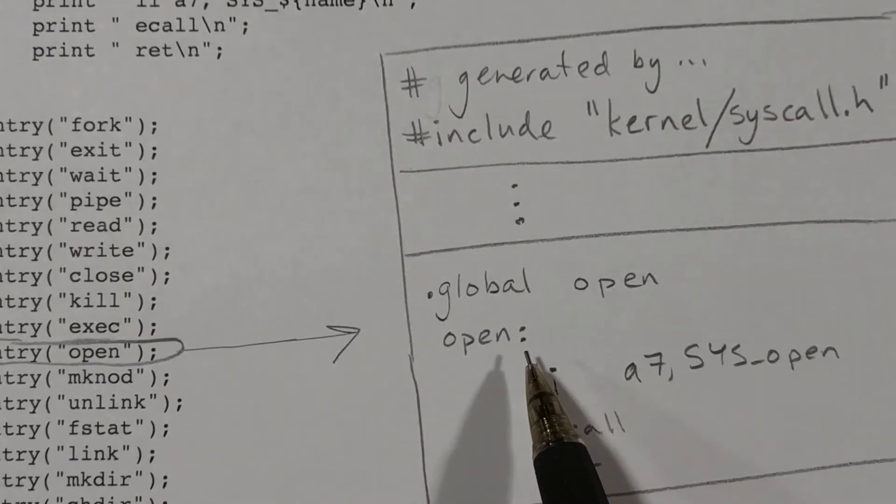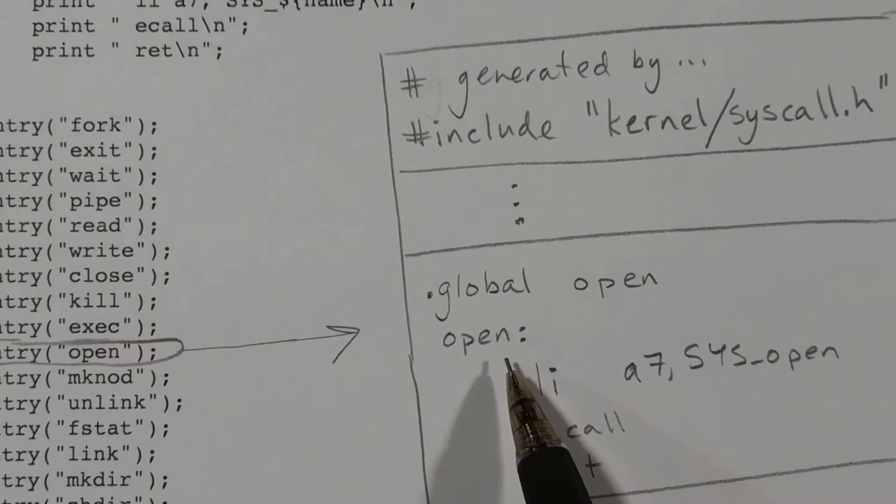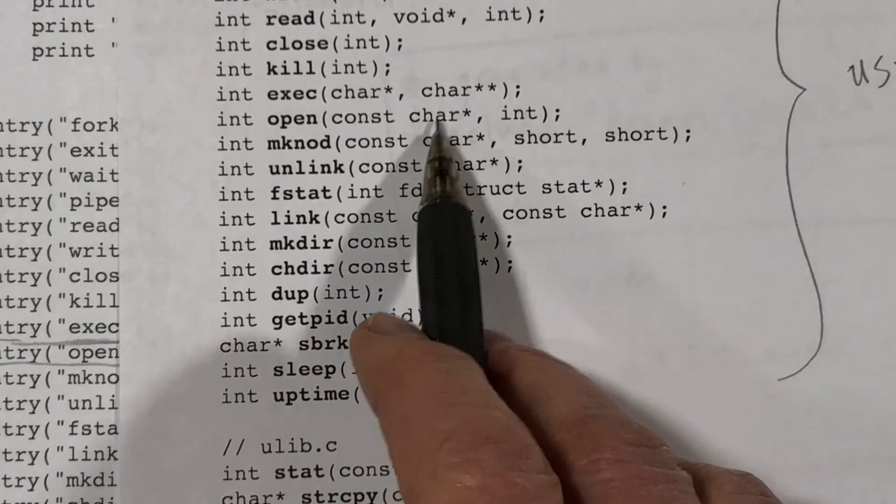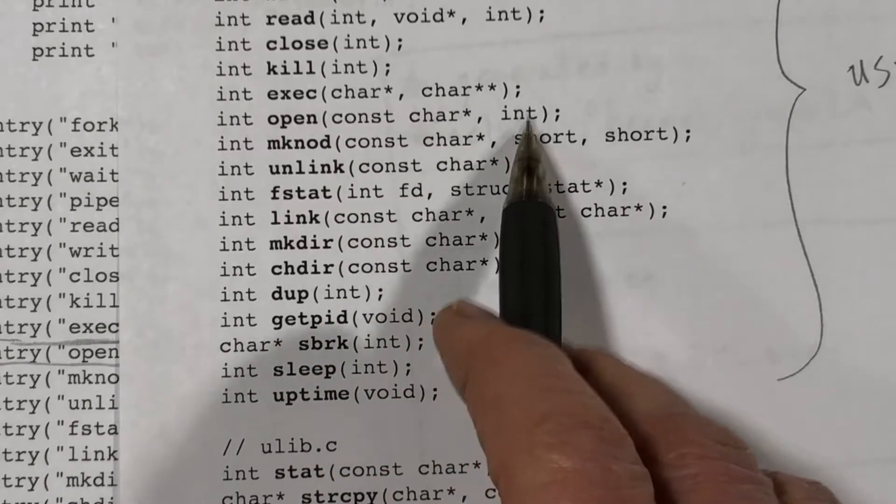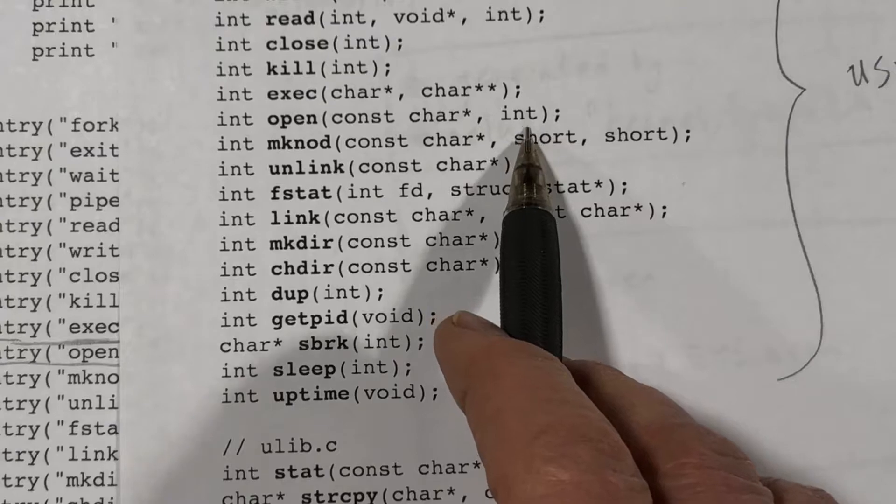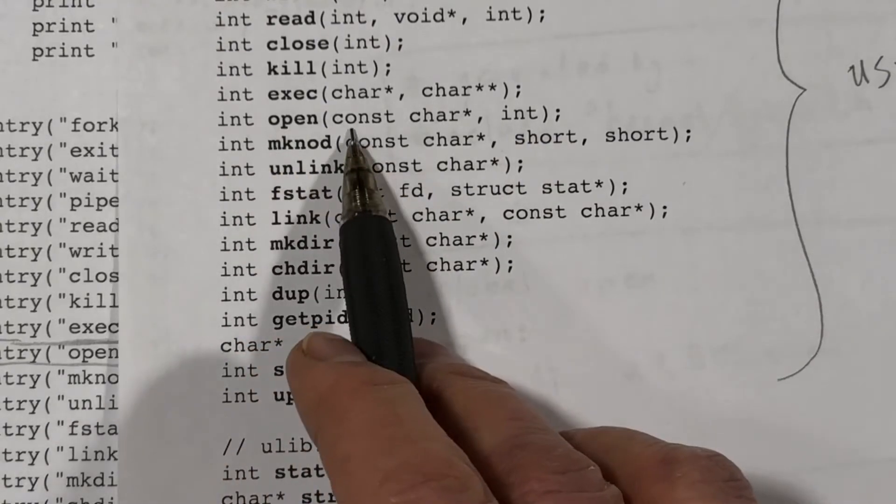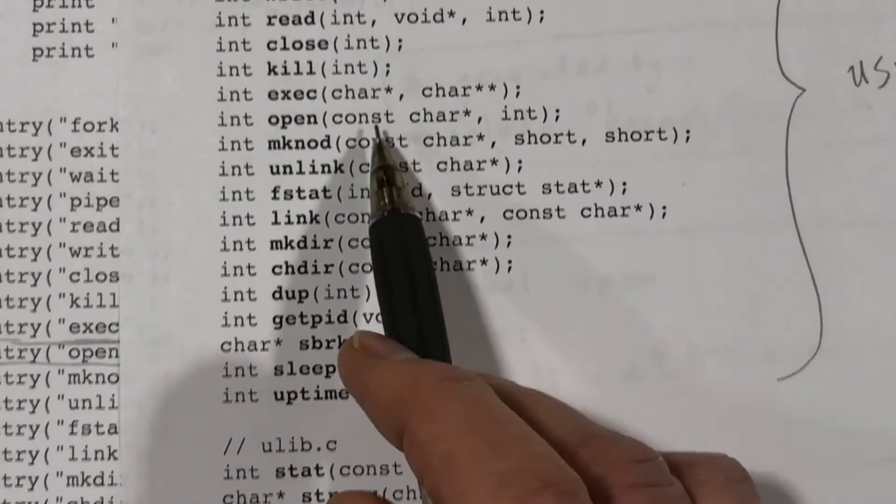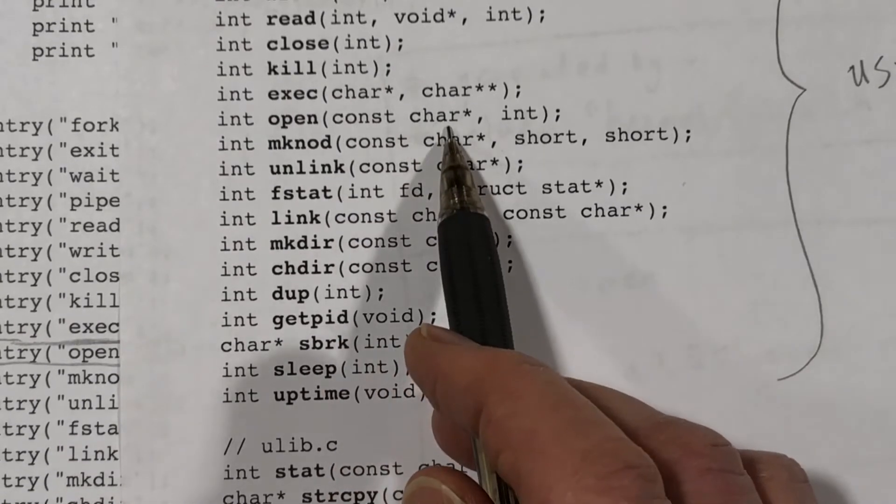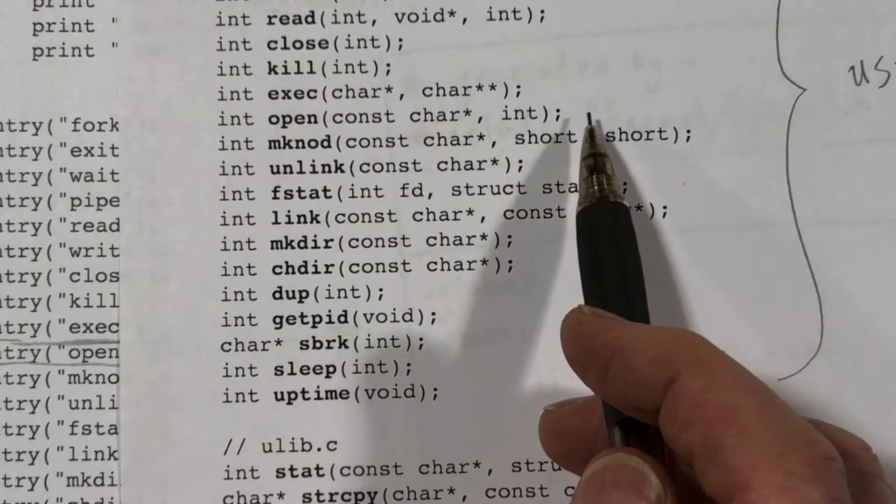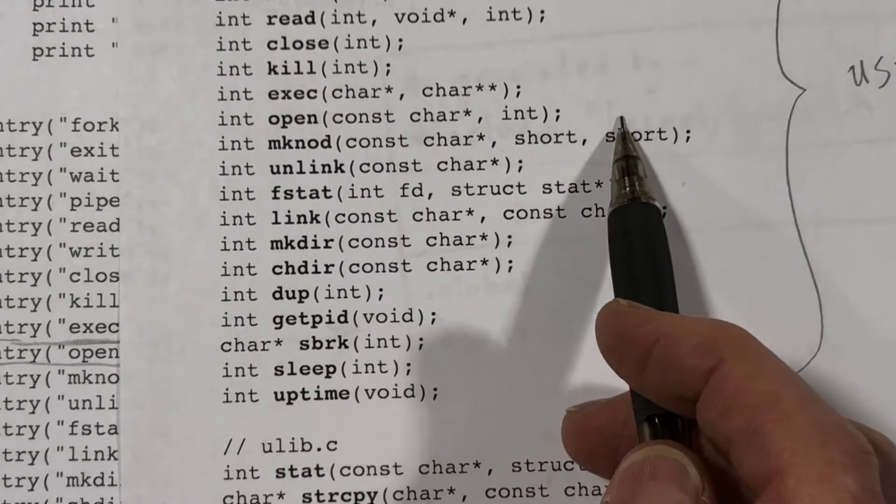Now, we are passing arguments in the open system call. So if we look at open here, we see that we passed two arguments pointing to the file name and the mode that we want to open that file in. And we return a value. Arguments are passed in the A registers. The first argument in A0, the second argument in A1, and if there are additional arguments in A2, A3, and so on.